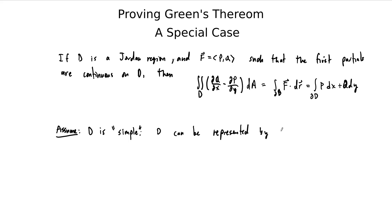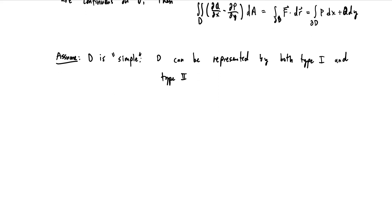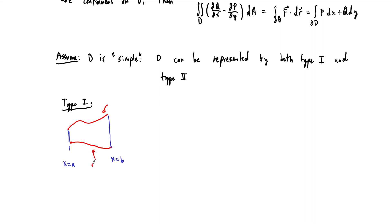So it can be represented by both the type 1 and type 2 perspectives. A type 1 region is bounded in the x-direction by vertical lines x equals a and x equals b, but then in the y-direction by functions: y equals g1(x) and y equals g2(x). That's a type 1 region.